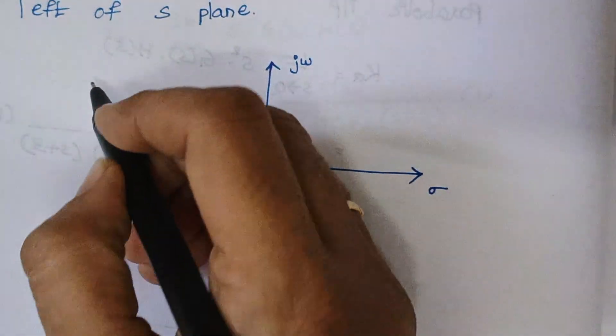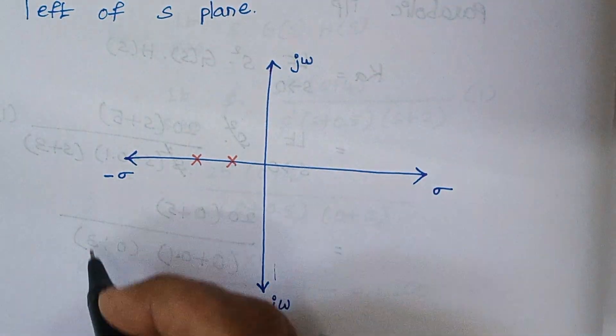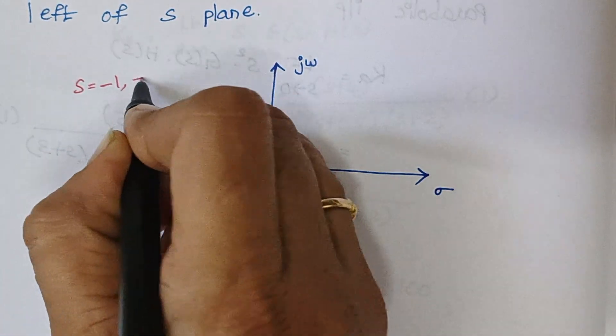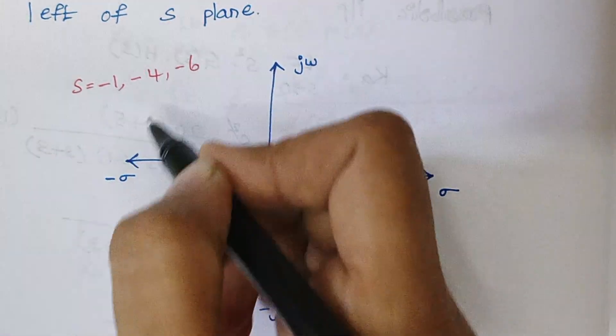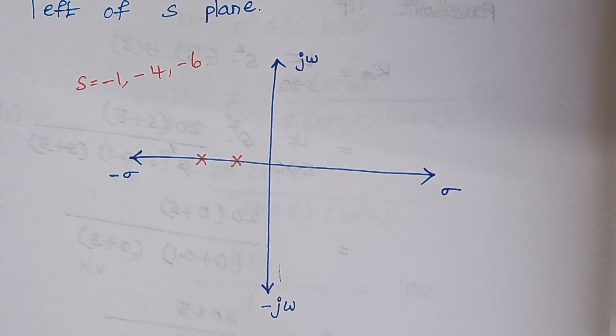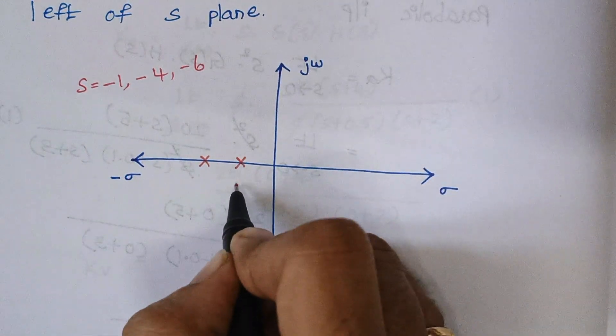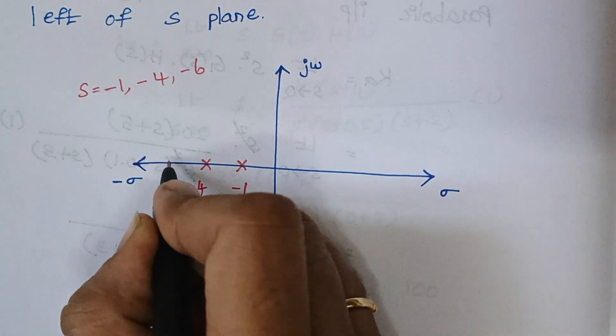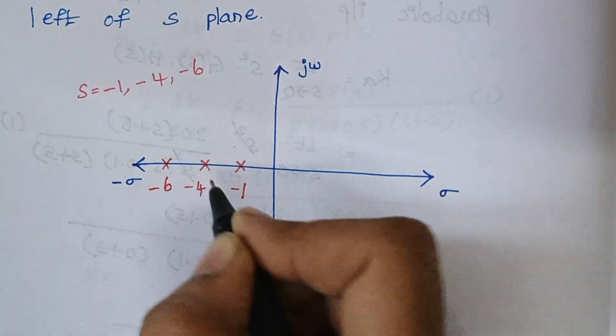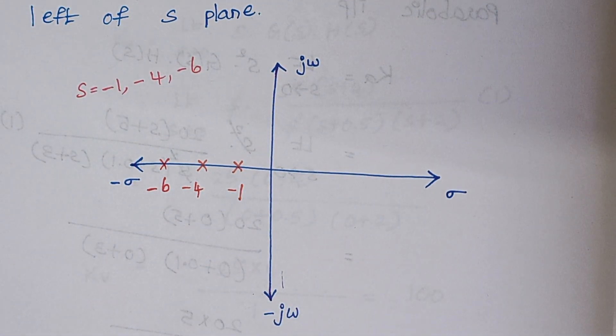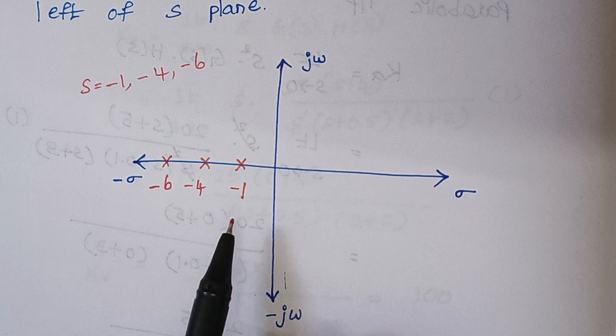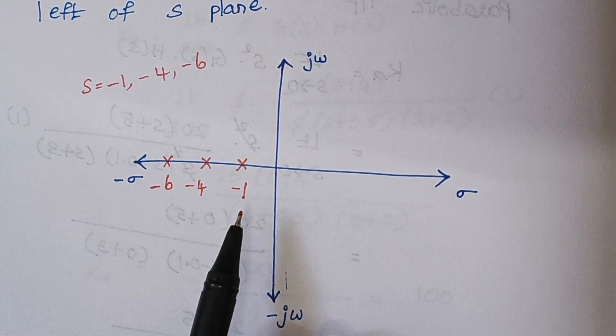For example, after solving the characteristic equation, let the roots be like this. S equal to minus 1, minus 4 and minus 6. How we will locate? We will locate here. So here let it be minus 1. Here let it be minus 4 and here you will be having minus 6. Suppose, if you have the location of these roots like this, then the system is said to be stable.